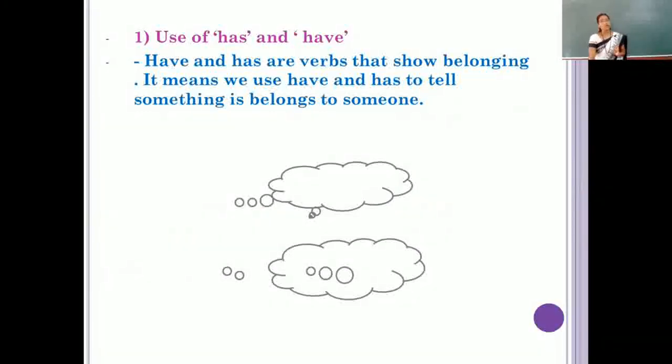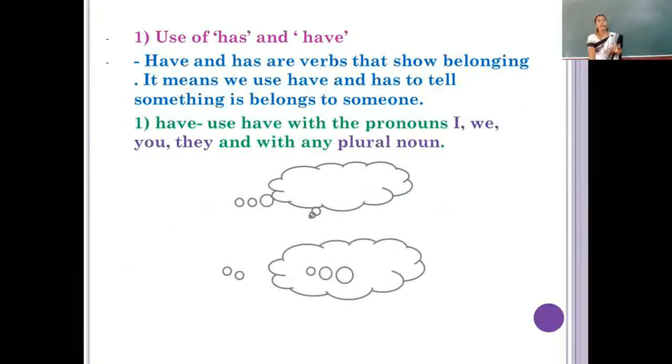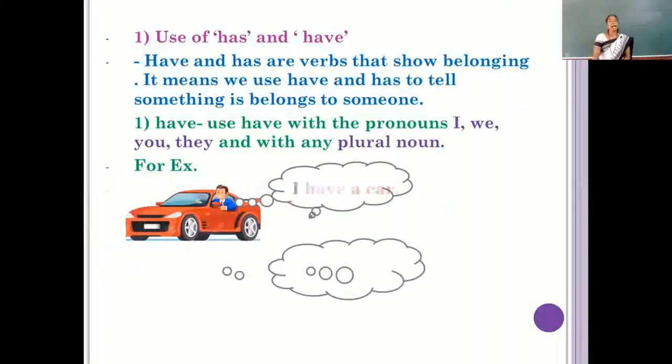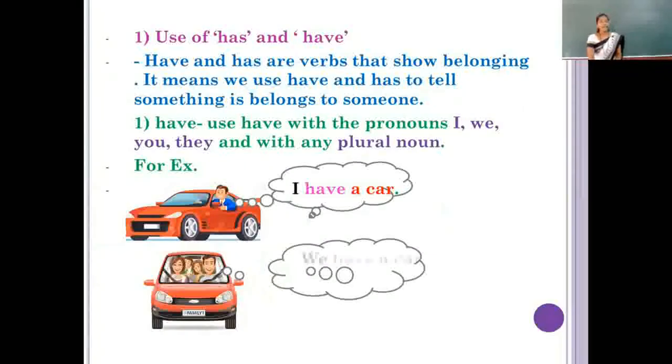So let us see the use of have. Have we can use with the pronoun I, we, you, they or any plural noun. For example, I have a car. After I pronoun, we can use have verb. We have a car.